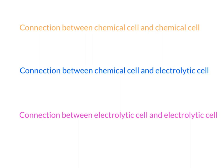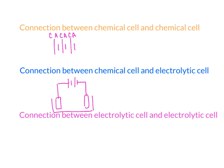Now focus carefully, because this is quite complicated. Between chemical cell and chemical cell — same type of cell — the electrodes will alternate: anode, cathode, anode, cathode (A-C-A-C). But between a chemical cell and an electrolytic cell, the arrangement is different.